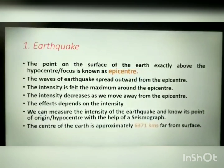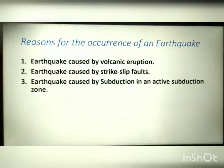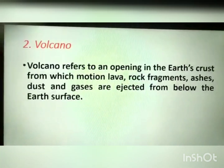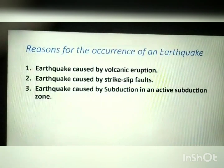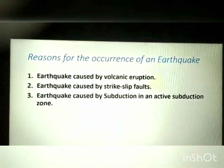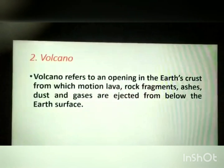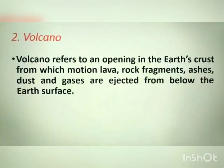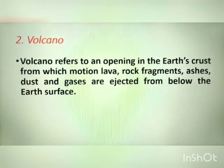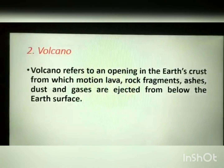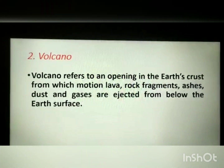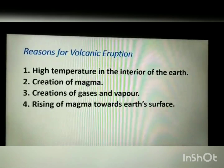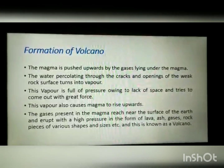We also learned the reasons for the occurrence of earthquakes and the types of earthquakes. The second topic was volcanoes. A volcano means an opening in the earth's crust from which molten lava, rock fragments, ashes, dust and gases are ejected from below the surface of the earth. We also learned about the reasons for volcanic eruption and the formation of volcanoes.